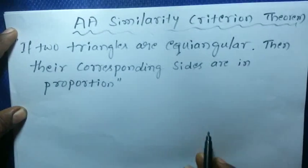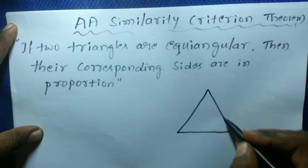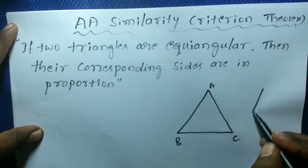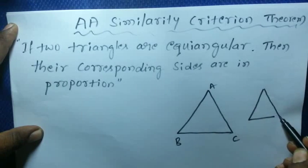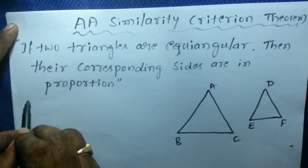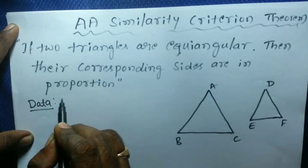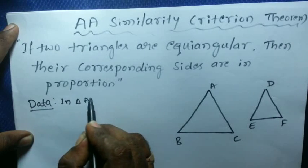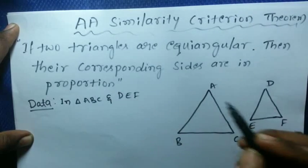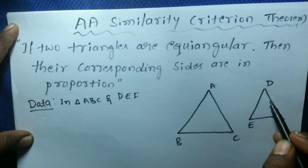First, you have to take the data. We take two triangles: triangle ABC and a smaller one, triangle DEF. These two triangles are equiangular. Equiangular means the angles of one triangle are equal to the angles of the other.